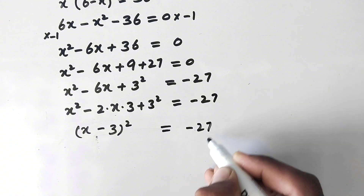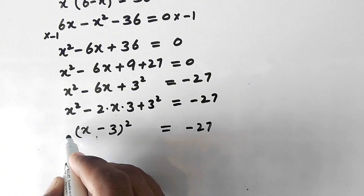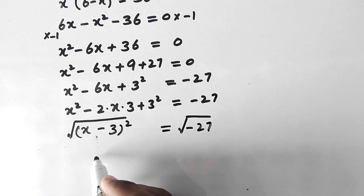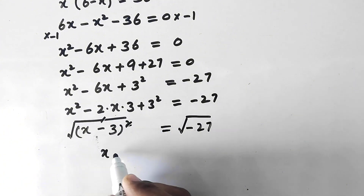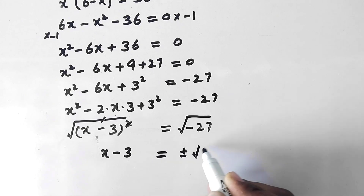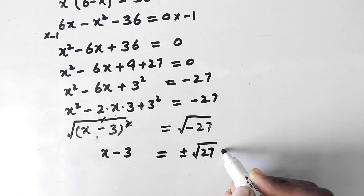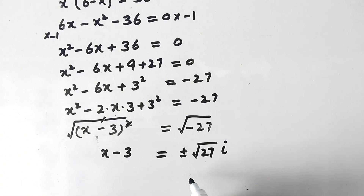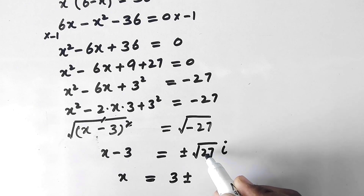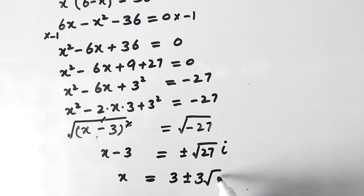We take the square root on both sides. The square cancels with the square root on the left, giving x minus 3 equal to plus or minus the square root of negative 27, which is the square root of 27 times i. Now, square root of 27 equals square root of 9 times 3, and since 9 is the square of 3, we get 3 root 3.